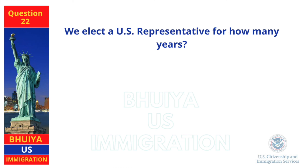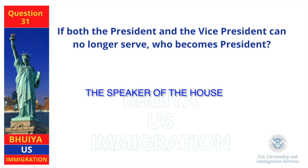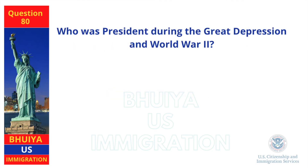We elect a U.S. representative for how many years? Two years. If both the President and the Vice President can no longer serve, who becomes President? The Speaker of the House. Who was president during the Great Depression and World War II? Franklin Roosevelt.